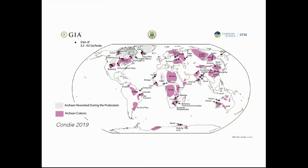All these cratons are shown in pink outlines. The diamonds I'll be talking about today are from West Africa. The majority of diamonds on Earth are found in these old cratonic areas. For example, the diamonds in Canada are from the Slave Craton. South Africa, where I'm from, has the Kaapvaal Craton and Zimbabwe. The very famous Argyle Mine is in northwestern Australia.